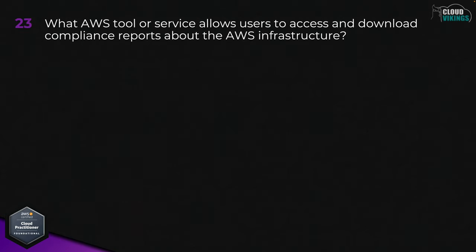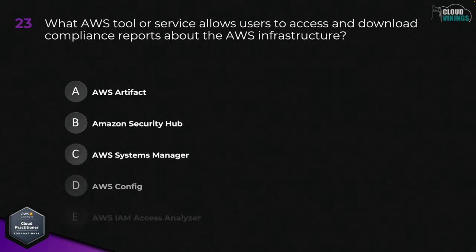Question twenty-three: what AWS tool or service allows users to access and download compliance reports about the AWS infrastructure? Options are: A, AWS Artifact; B, Amazon Security Hub; C, AWS Systems Manager; D, AWS Config; or E, AWS IAM Access Analyzer. The correct answer is A, AWS Artifact.